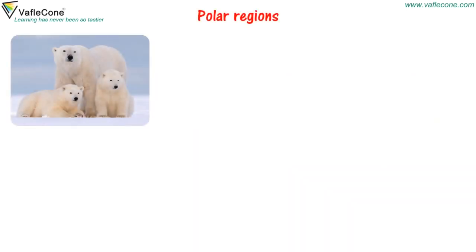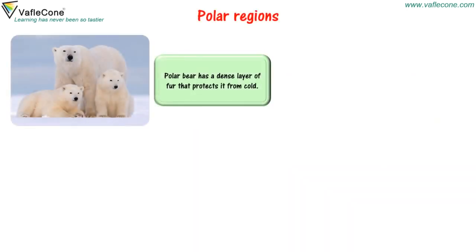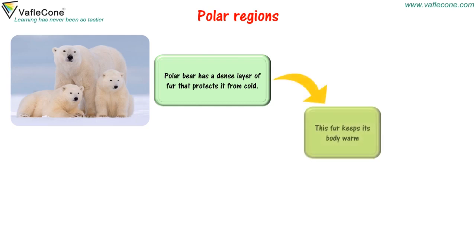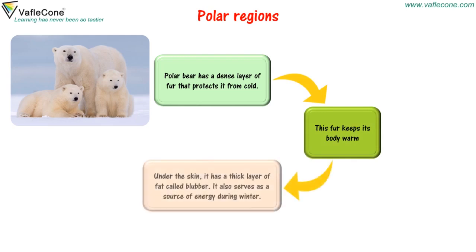Polar Regions — Polar Bear: The polar bear has a dense layer of fur that protects it from cold and keeps its body warm. Under the skin, it has a thick layer of fat called blubber, which also serves as a source of energy during winter.